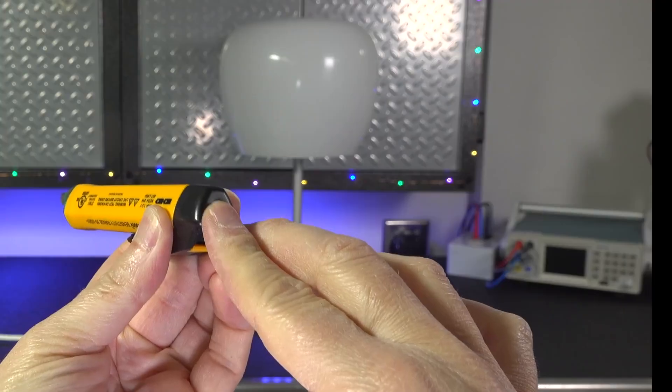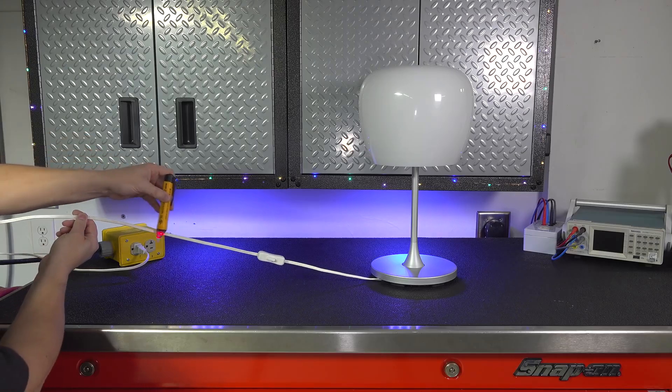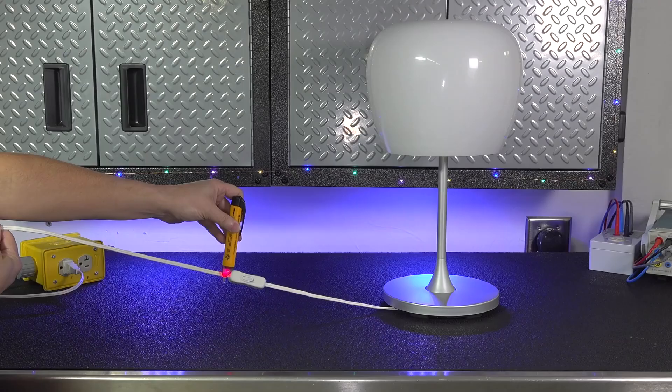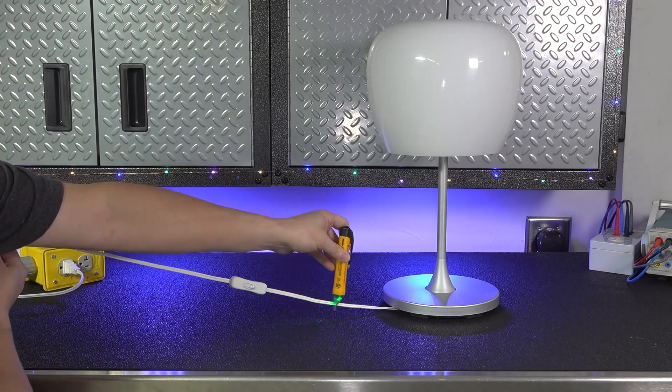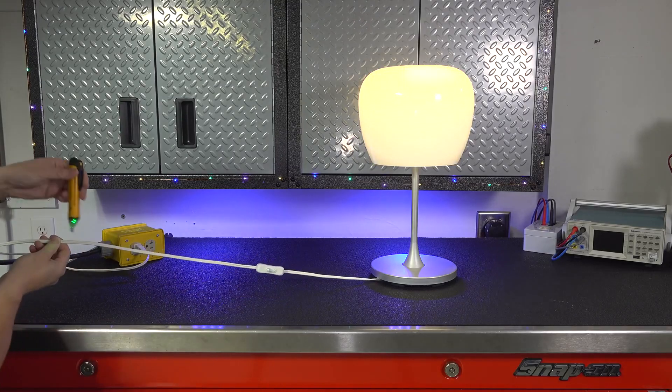Here's a typical household light with a polarized plug. Now this pen detects voltage and it lights up red any time it senses electricity. Now it sees power up until the switch, but the switch is off and now you can see it's green afterwards because there's no power present.